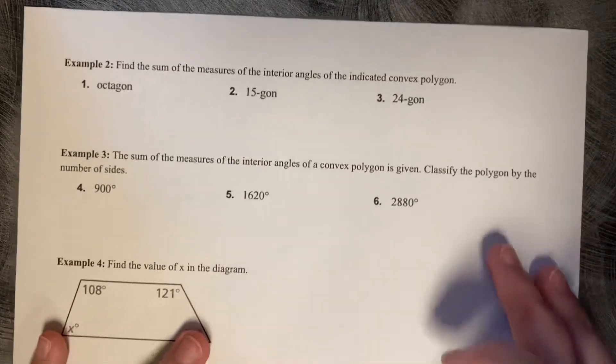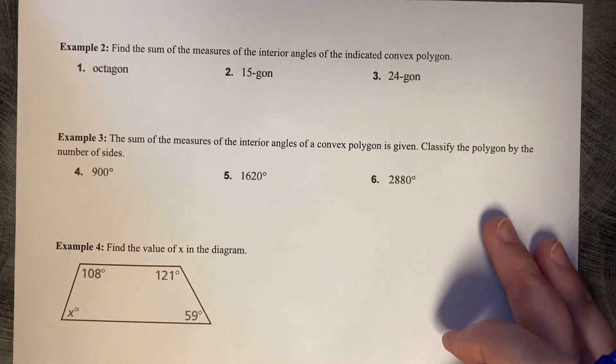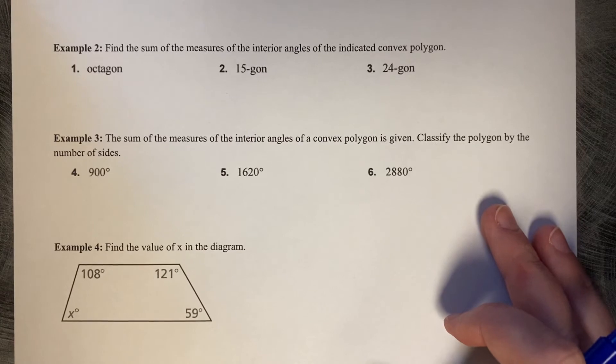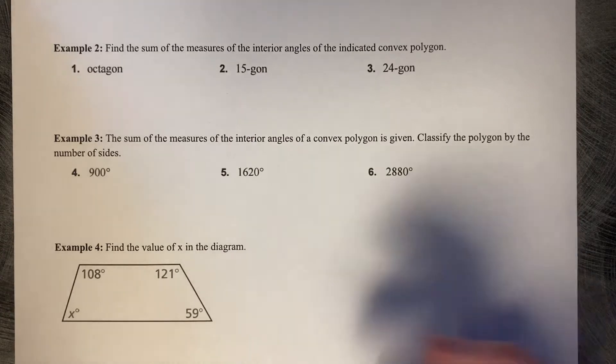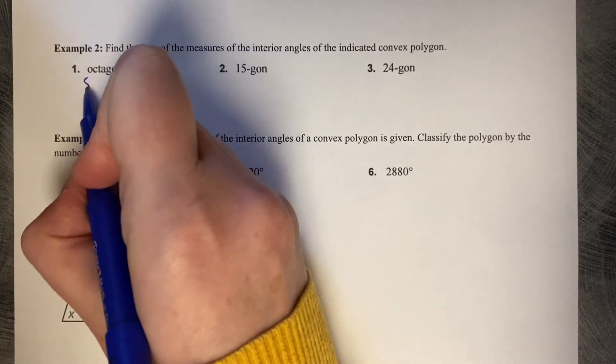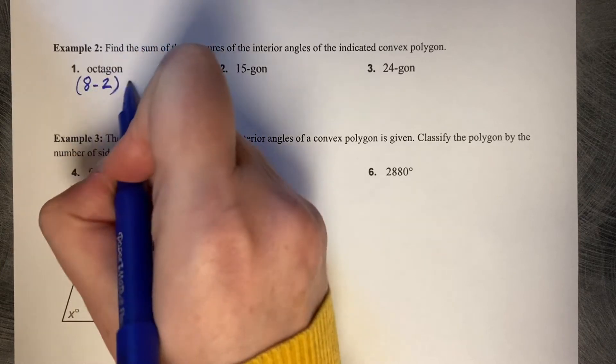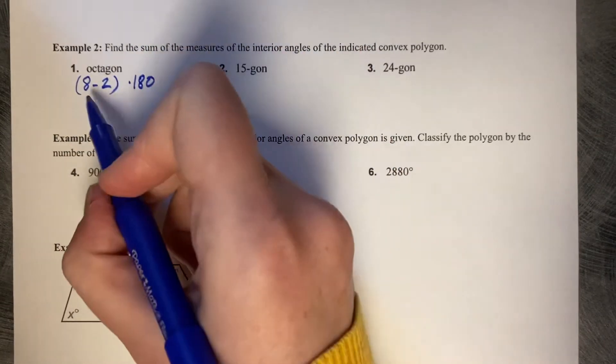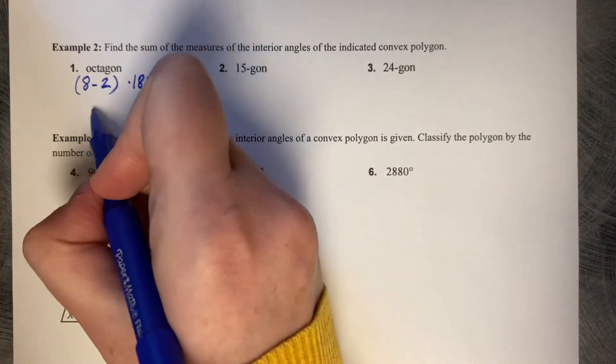Alright, let's try some more examples. Find the sum of the measures of the interior angles of the indicated convex polygon. So an octagon is an eight-sided figure, eight minus two times 180. We already did this one. Six times 180, which is 1080.